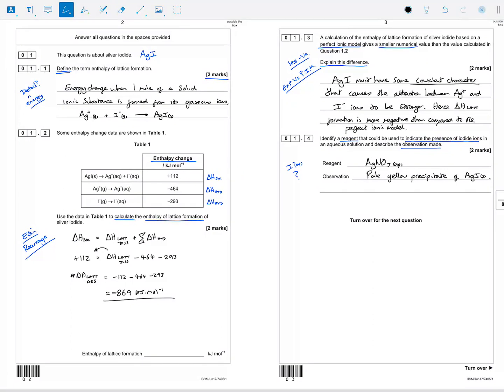Okay, so enthalpy question there. A little bit of rearrangement, as we would expect with any of the expressions we use nowadays. They ask us to rearrange them. So yeah, I'm pretty confident I've got all the marks on that. I'm happy with my explanation of the perfect ionic model and my definition of enthalpy of lattice formation. We'll see what the mark scheme's got to say.